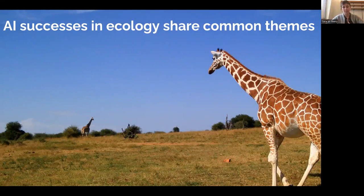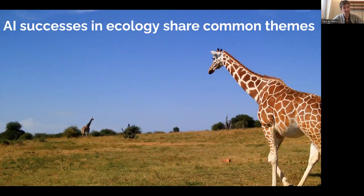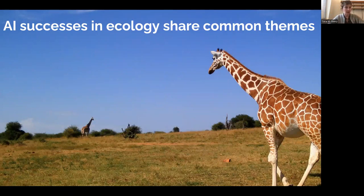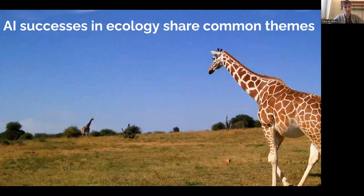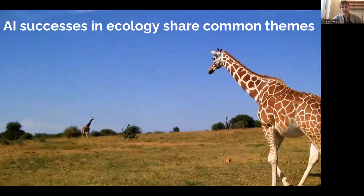Examples include a model I developed called the MegaDetector, which does simple human/animal/vehicle filtering for camera trap imagery and is used in 43 countries — we processed close to 100 million images last year. Or things like the computer vision suggestions in iNaturalist, or the automated sound ID capability in the Merlin app — the Merlin sound ID has close to 3 million users a month now. These are examples of AI that is actually changing the way we do ecology.